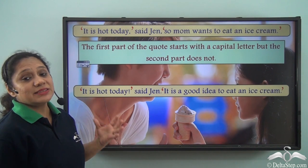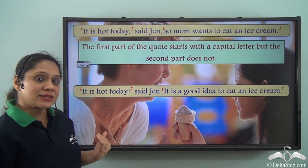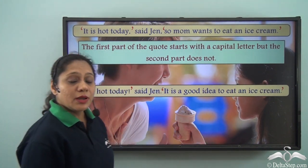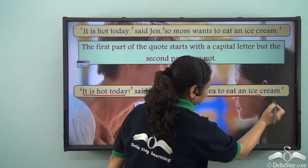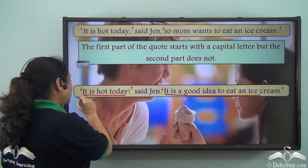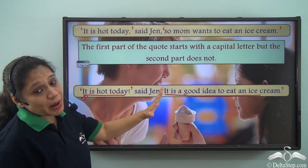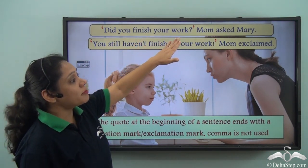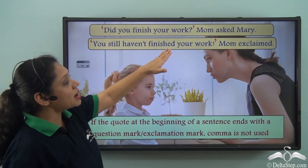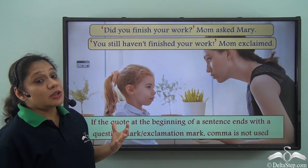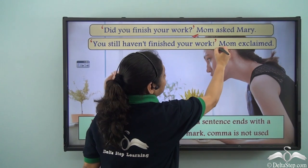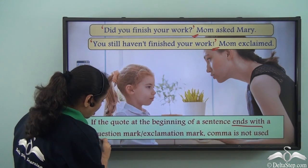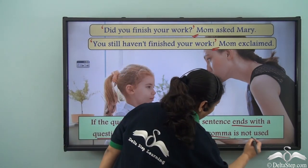But if we split the quote in such a way that it forms two separate sentences, for example: 'It is hot today,' said Jen. 'It is a good idea to eat an ice cream.' — then both the first and the second part of the quote start with a capital letter. Also, in both these cases you will notice the comma is missing. Remember that if the quote at the beginning of a sentence ends with a question mark or an exclamation mark, a comma is not used.